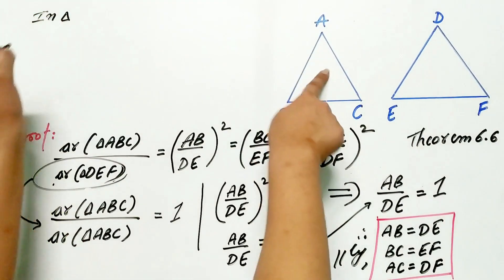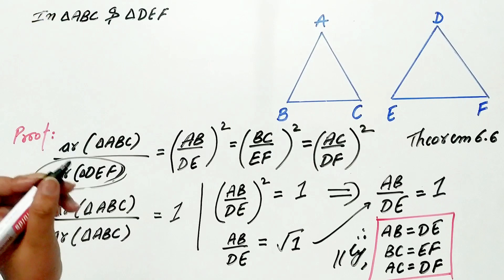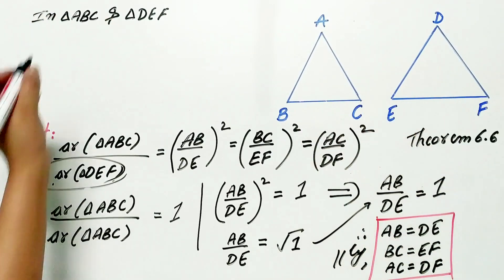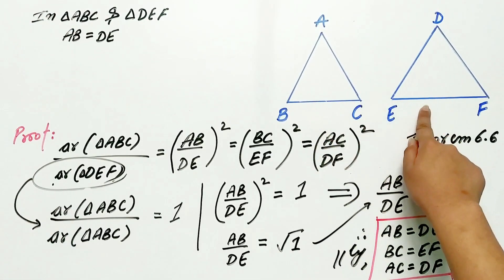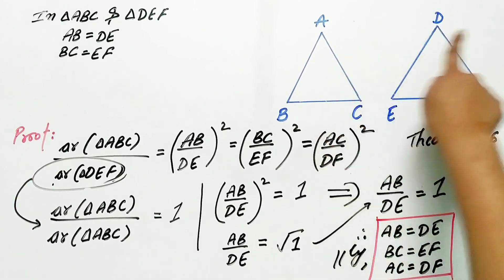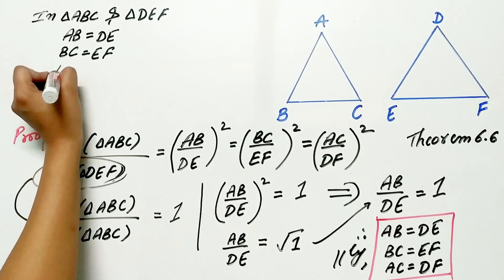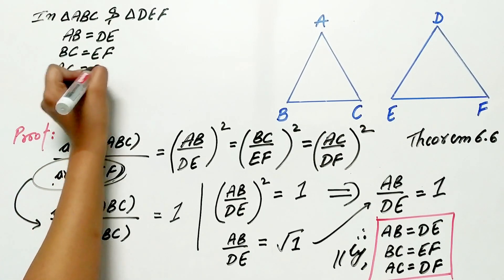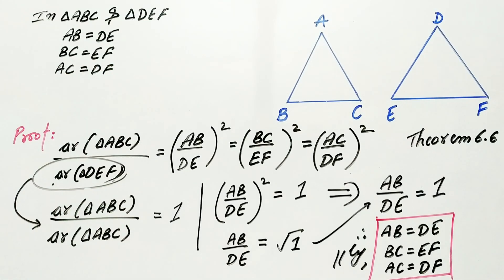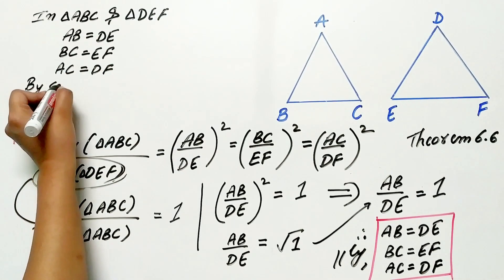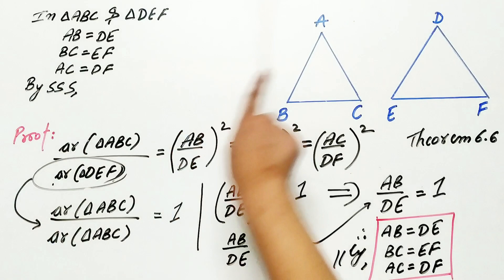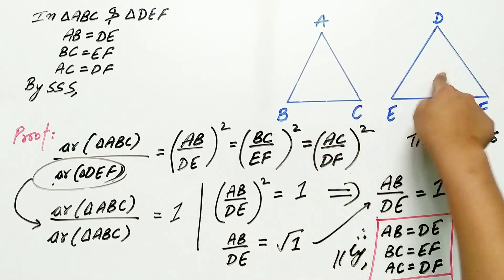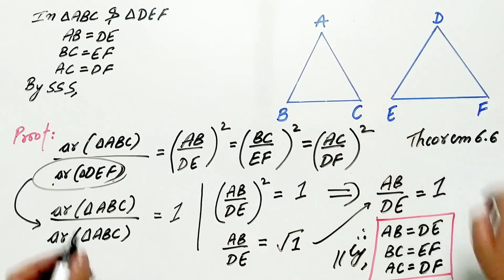In triangle ABC and DEF, AB is equal to DE, BC is equal to EF, AC is equal to DF. We have already proved it. Hence, by SSS, that means side, side, side, both the triangles are congruent.